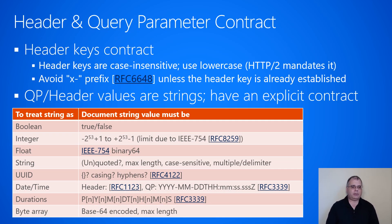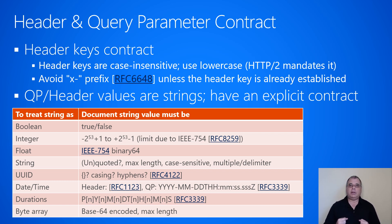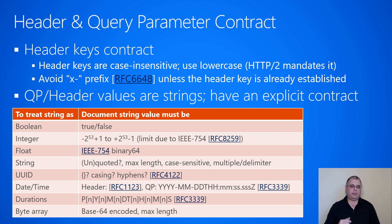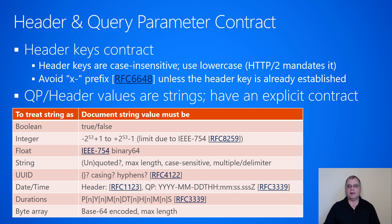Now let's talk about header and query parameter contracts. For header keys, they are case-insensitive — unlike URLs, which are case-sensitive except for the scheme and host. We recommend using lowercase for header names because HTTP/2 mandates this, so if you start using lowercase now, you're already set up when you migrate to HTTP/2. For custom service headers, many people prefix them with X- to indicate an extension header. However, RFC 6648 discourages this, so for new custom headers, do not prefix them with X- unless the header key is already well-established in your company.